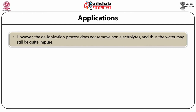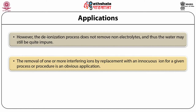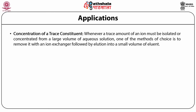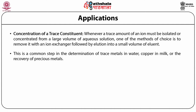However, the deionization process does not remove non-electrolytes, and thus the water may still be quite impure. Ion exchange offers a convenient and effective method for desalting solutions of organic or biochemical mixtures. The removal of one or more interfering ions by replacement with an innocuous ion for a given process is an obvious application. The determination of total salt content of a solution is simplified by conversion of the cations to hydrogen ions or the anions to hydroxide ions, followed by simple acid-base titration. Whenever a trace amount of an ion must be isolated or concentrated from a large volume of aqueous solution, it can be removed with an ion exchanger followed by elution into a small volume of eluent — this is a common step in the determination of trace metals in water, copper in milk, or the recovery of precious metals.